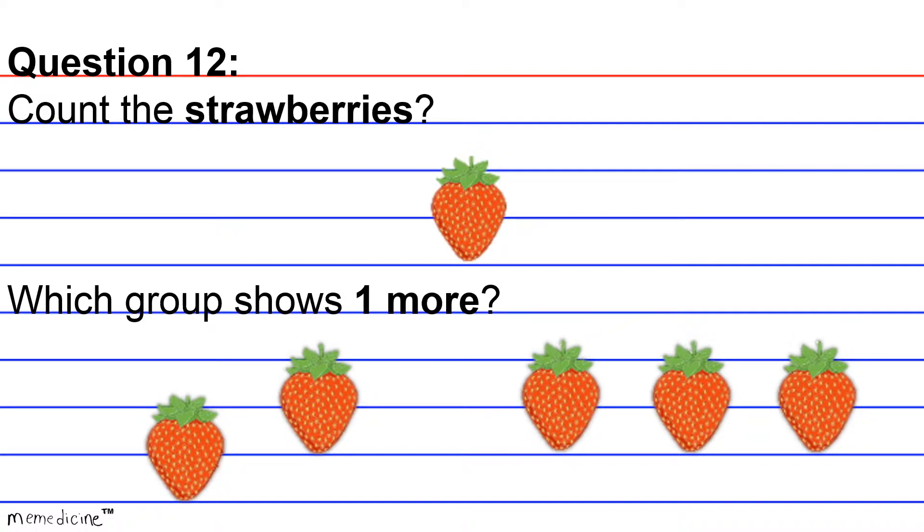Our strategy is to count the strawberries that we were first presented with. One, there's one strawberry. Now let's think about what the second question is asking.